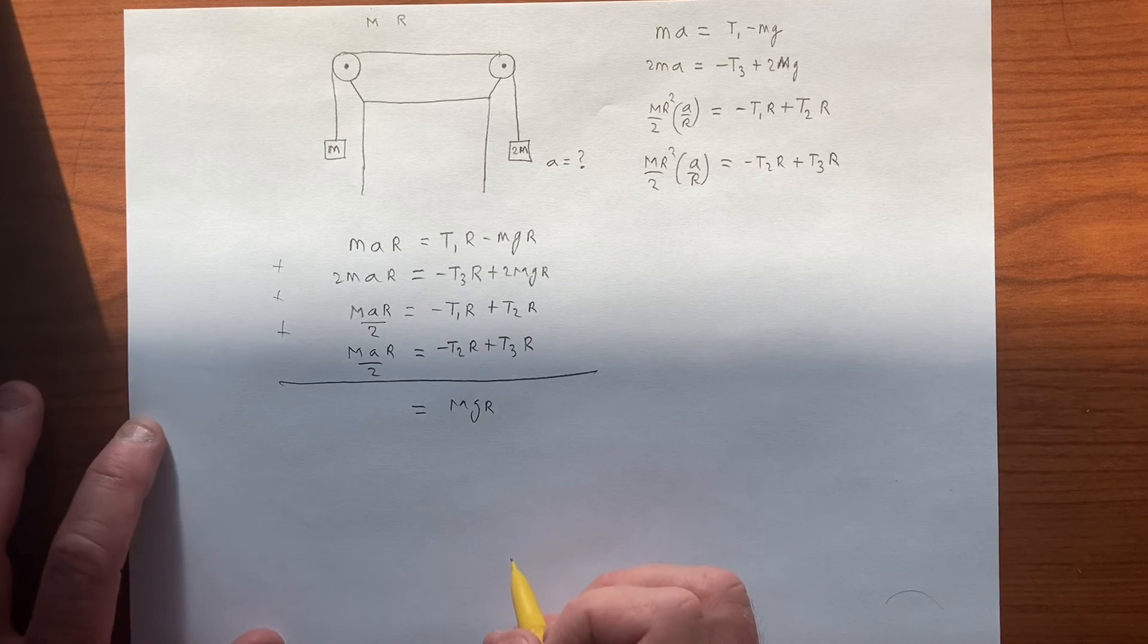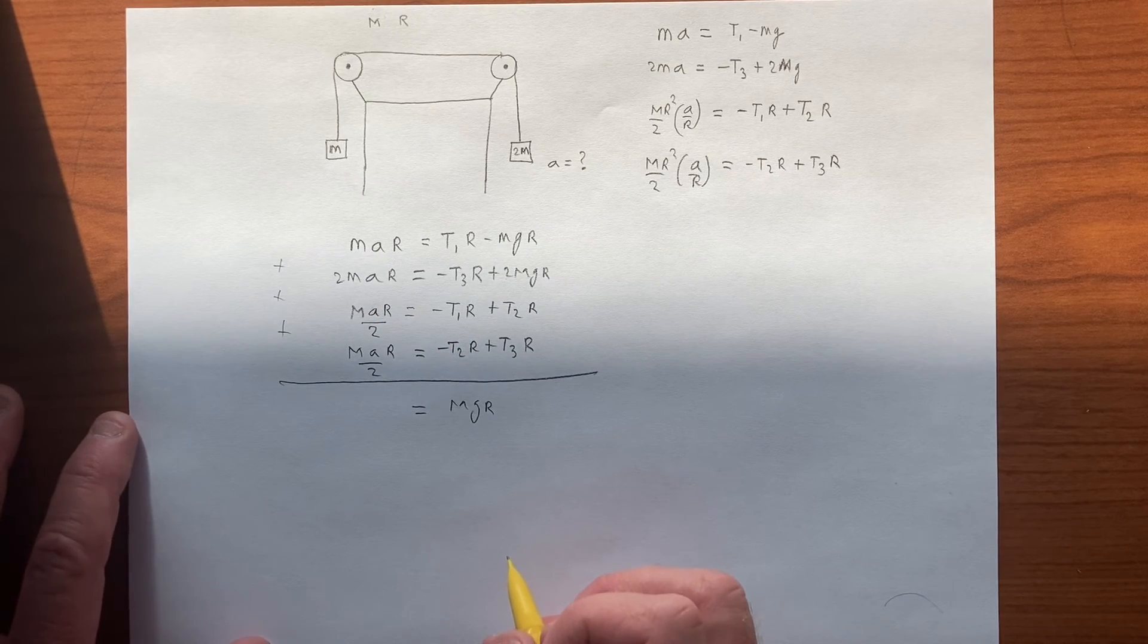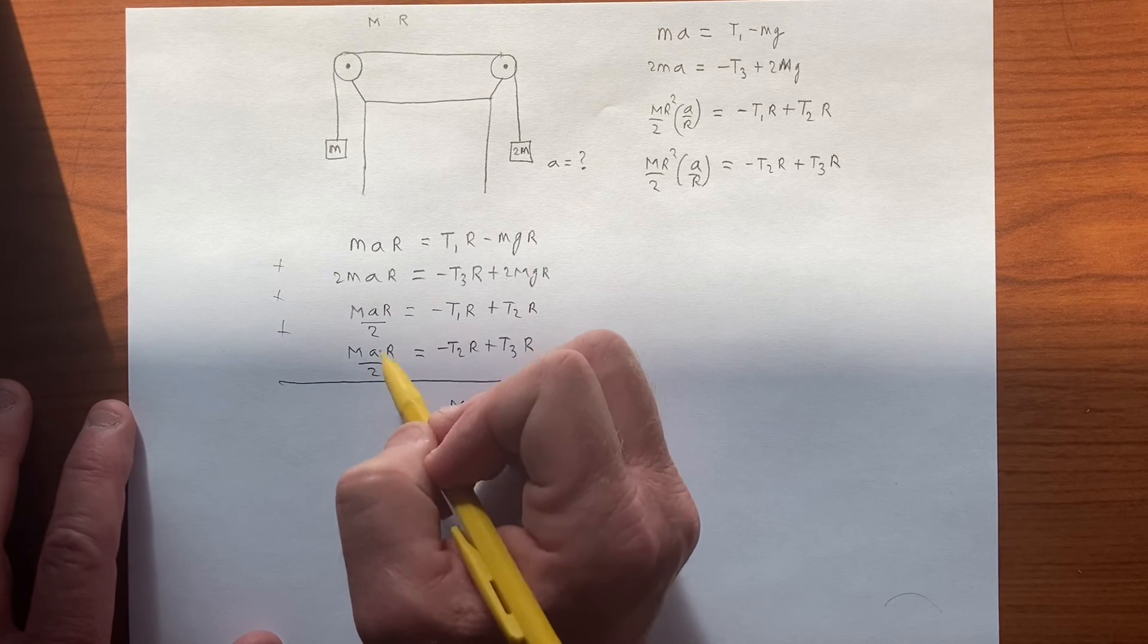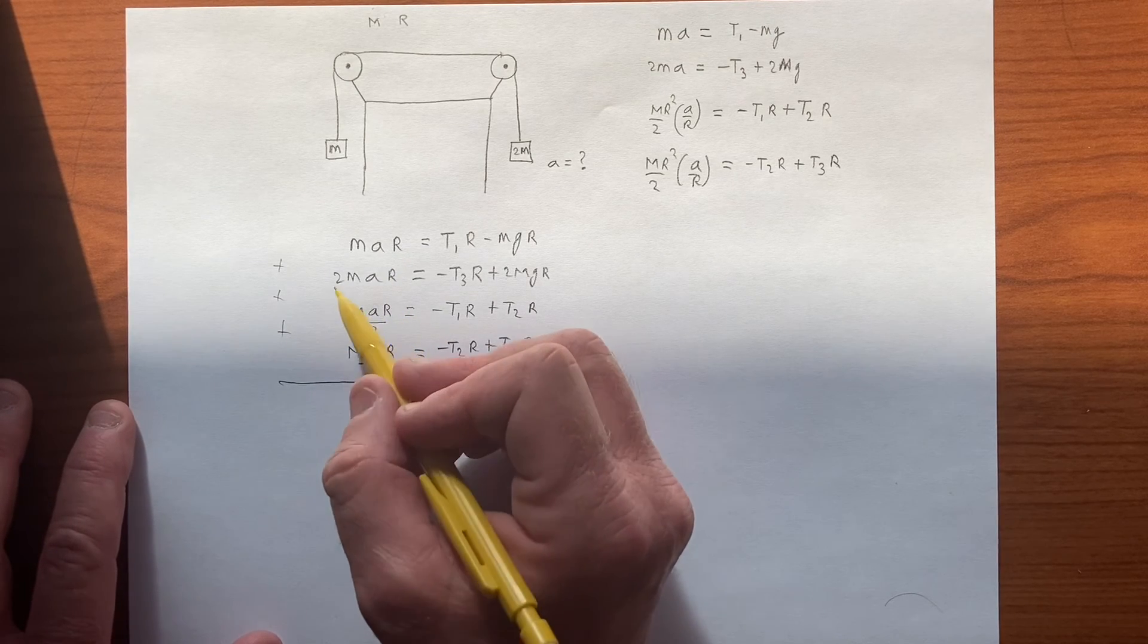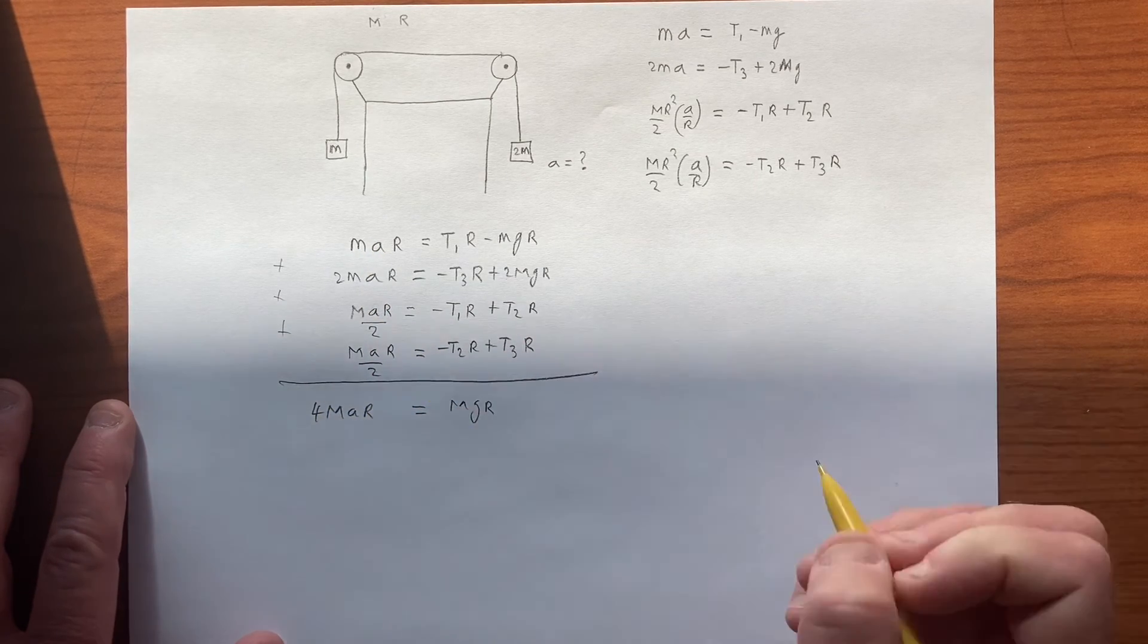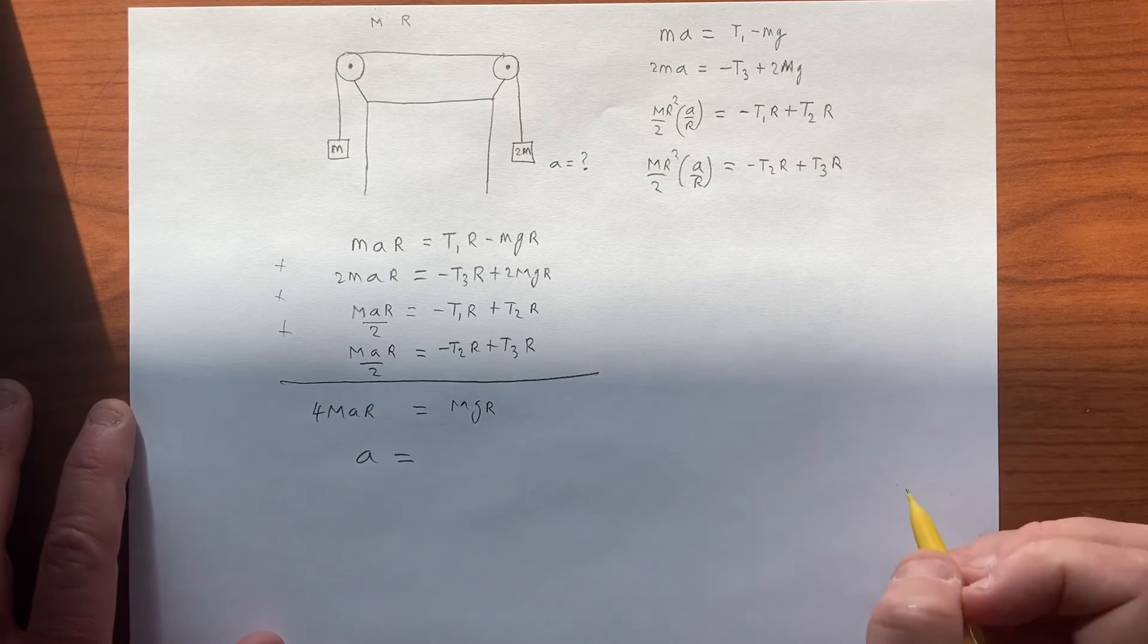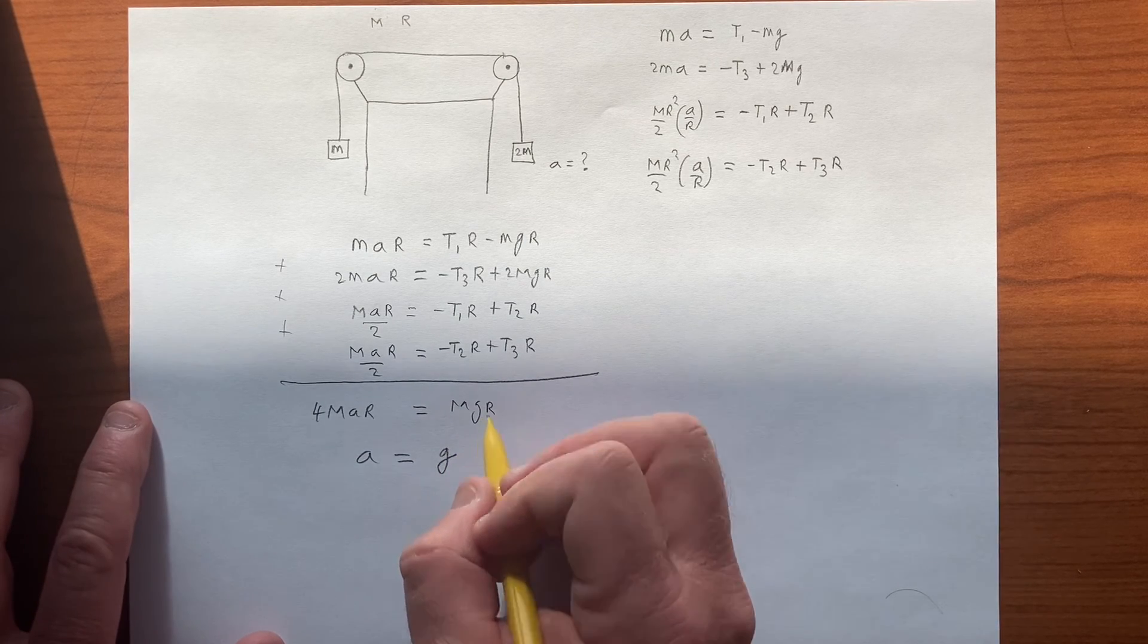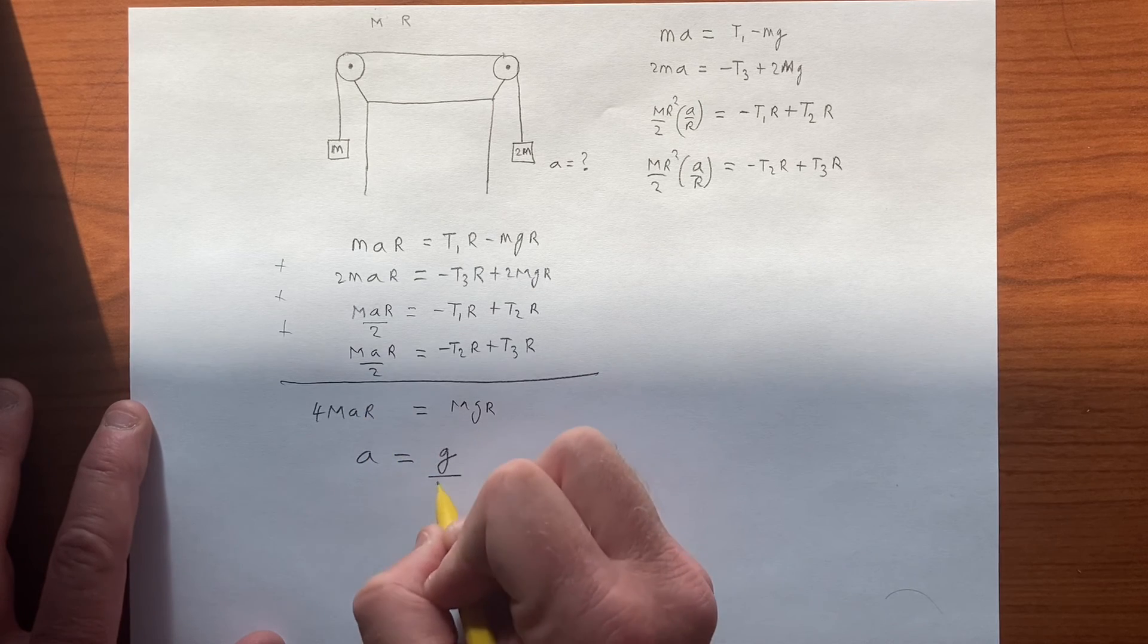on the left-hand side we have, we have mar, 2mar, mar over 2, and mar over 2, so this is a mar, so we have 2, 3, 4 m a r, and so a is going to be g over 4.